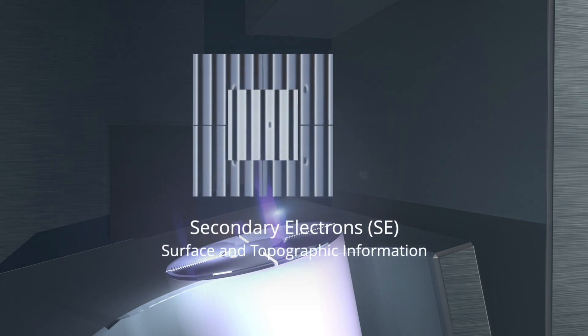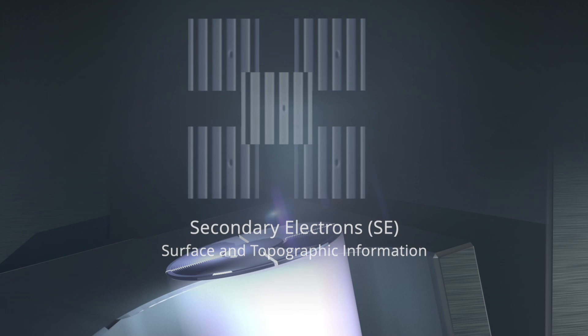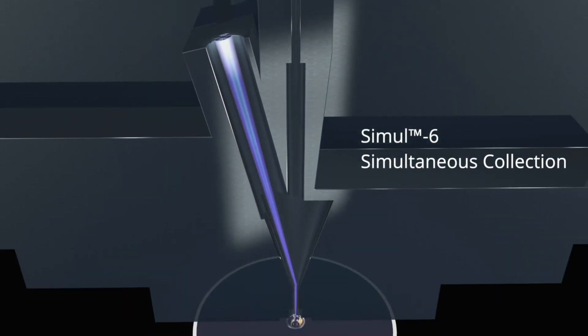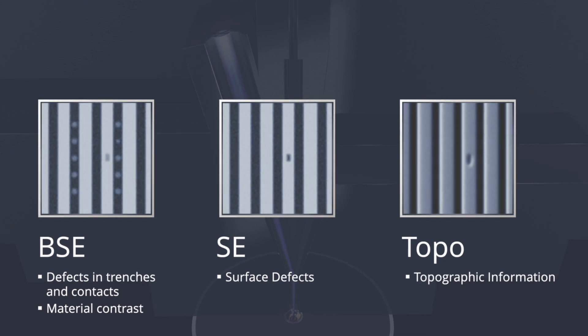Six channels work simultaneously to collect various signal types from defects. The signal collected from secondary electrons provide surface and topographic information. The backscattered electrons provide information on material contrast and defects in deep structures.